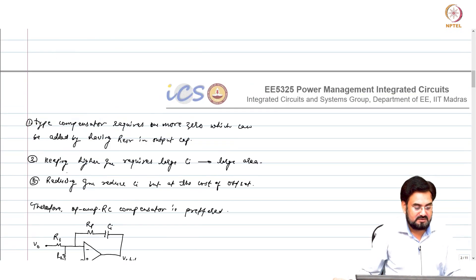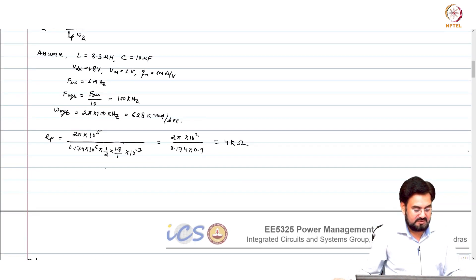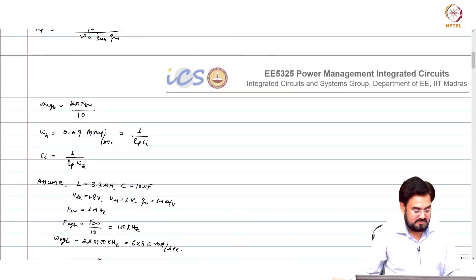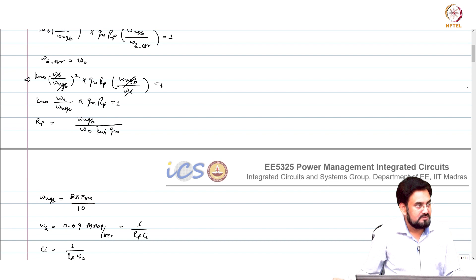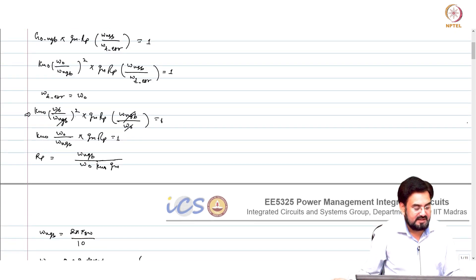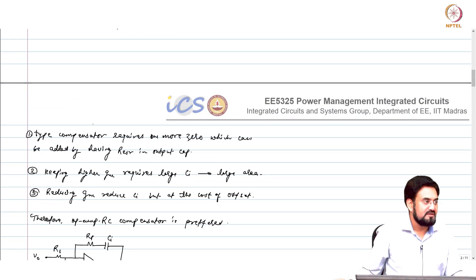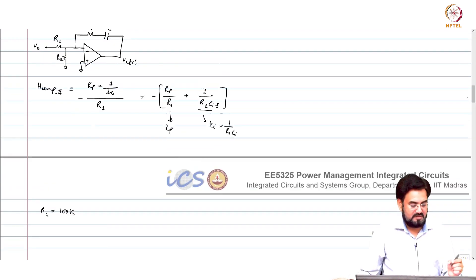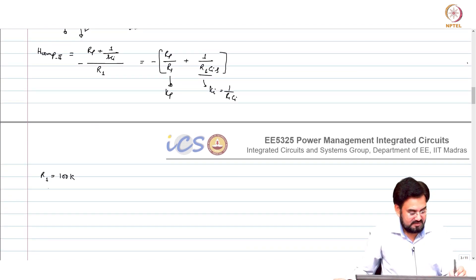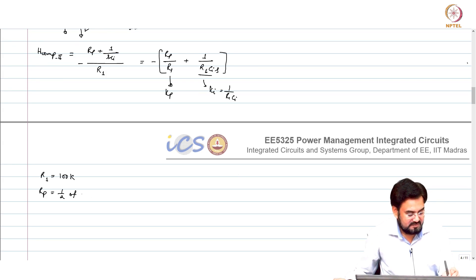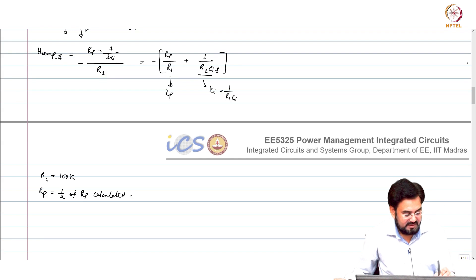So if R1 is 100k and the beta factor is gone, what would happen to the value of Rp? The loop gain is initially half, but now it is double. So your proportional gain will be half. Half resistance — so resistance will be half. R1 is 100k, so Rp requirement will be half of Rp calculated previously.